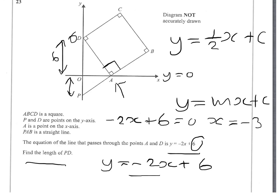So minus 2 times 3 is minus 6, plus 6 equals 0. We now know that the point (3, 0) is on our equation PB.